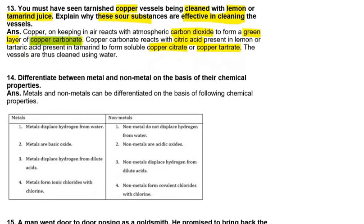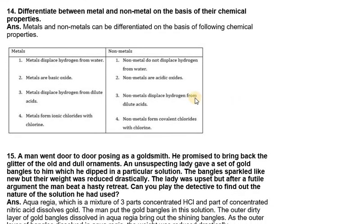Question 14: differentiate between metals and non-metals based on their chemical properties. First, metals displace hydrogen from water; non-metals do not. Second, metals form basic oxides; non-metals form acidic oxides. Third, metals displace hydrogen from dilute acids; non-metals do not. Fourth, metals form ionic chlorides, whereas non-metals form covalent chlorides.